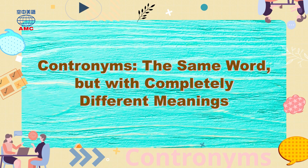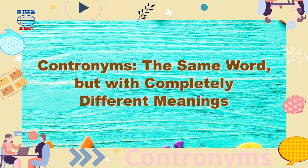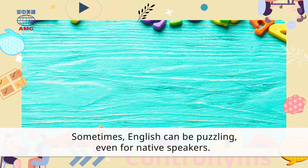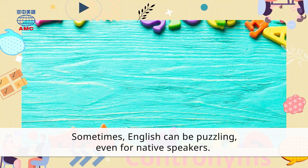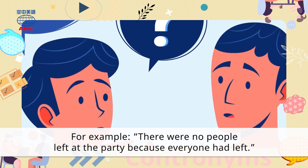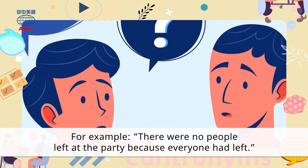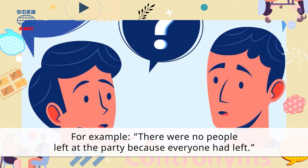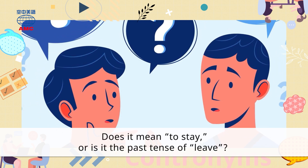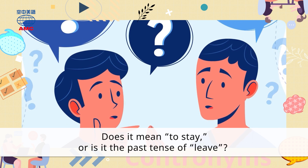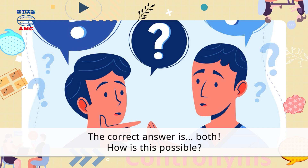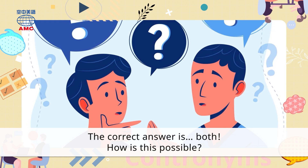Contronyms: the same word but with completely different meanings. Sometimes English can be puzzling, even for native speakers. For example: 'There were no people left at the party because everyone had left.' What is the meaning of 'left' in this sentence? Does it mean to stay? Or is it the past tense of leave?